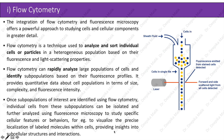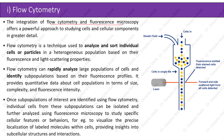Flow Cytometry: the integration of flow cytometry and fluorescence microscopy offers a powerful approach to studying cells and cellular components in greater detail. Flow cytometry is a technique used to analyze and sort individual cells or particles in a heterogeneous population based on their fluorescence and light scattering properties. It can rapidly analyze large populations of cells and identify subpopulations based on their fluorescence profiles, as shown in the diagram.